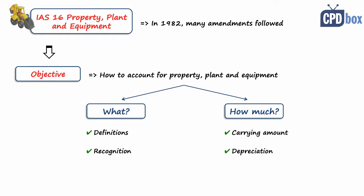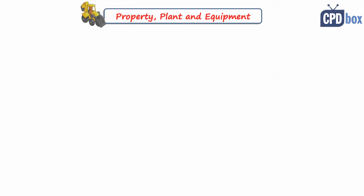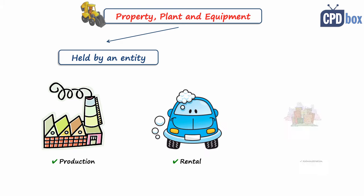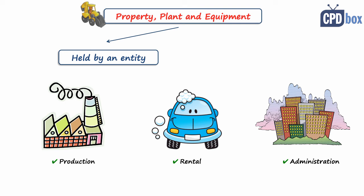So property, plant and equipment are tangible assets that are held by the entity for use in the production or supply of goods or services, or for rental to others, or for administrative purposes, and are expected to be used during more than one period.